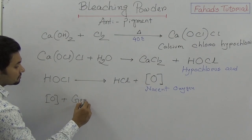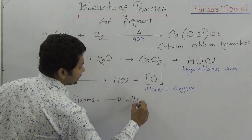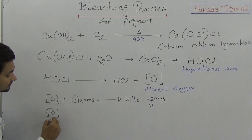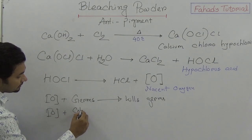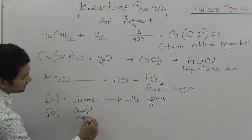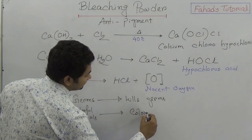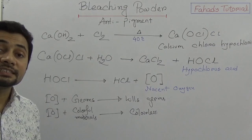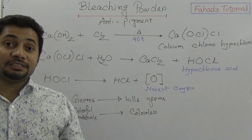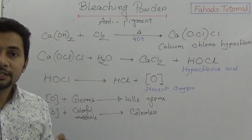When nascent oxygen reacts with germs, it kills them. And when this nascent oxygen reacts with colorful materials, it turns them colorless. Because nascent oxygen has the power to kill germs as well as to wash clothes, bleaching powder is known as an anti-pigment.